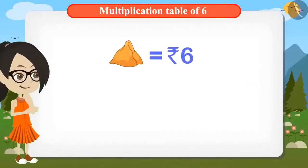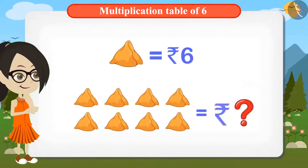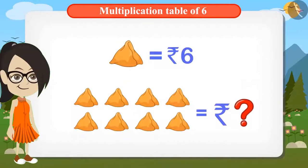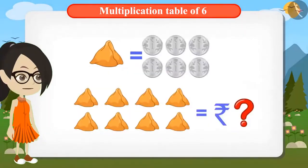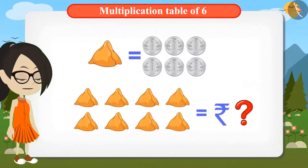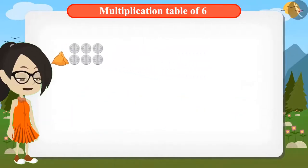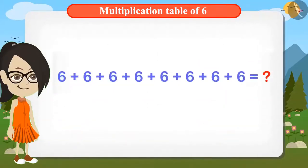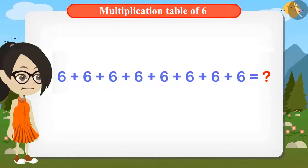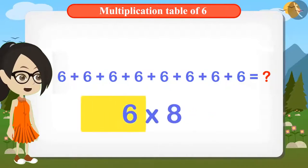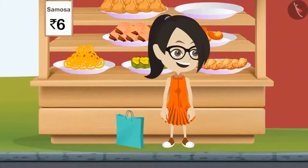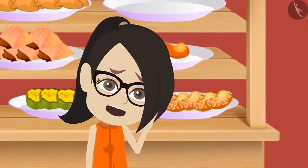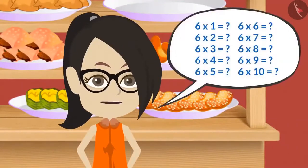Vandana is trying to find out what is the cost of 8 samosas if one samosa costs 6 rupees. One samosa costs 6 rupees. To find the cost of 8 samosas, let me add 6 rupees 8 times. Vandana is adding 6 rupees 8 times. Multiplying 6 by 8 is better than adding 6 repeatedly 8 times. But there is a problem: I do not know the table of 6. If I had known the table of 6, I could have immediately calculated the cost of 8 samosas.